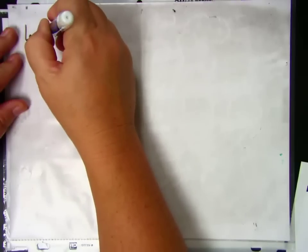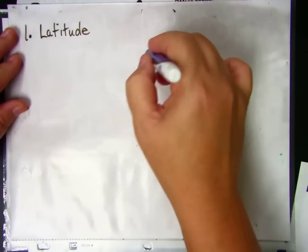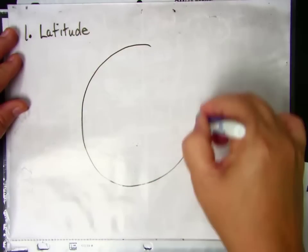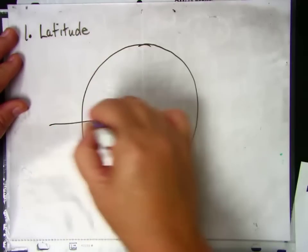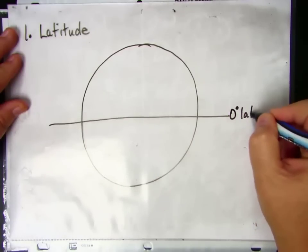The first factor is latitude. And latitude is your location on the Earth.